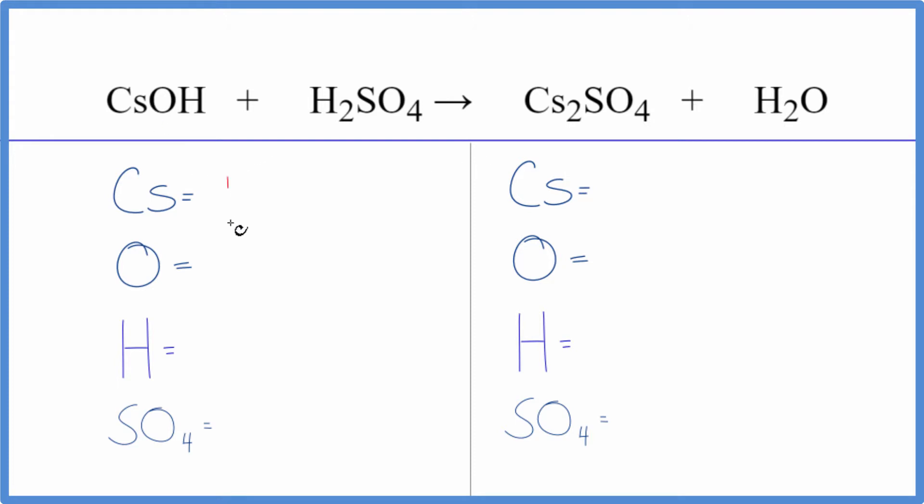Let's count the atoms up. We have one cesium, one oxygen, one hydrogen, plus these two here, so we have three hydrogens. Now you notice I didn't count these oxygens here.